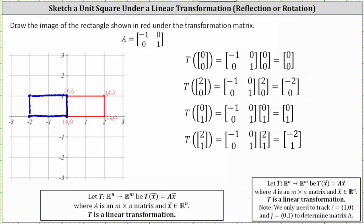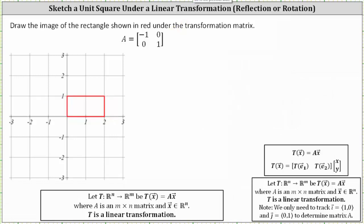Another approach would be to recognize that since we have the transformation matrix, the first column is the transformation of the vector e₁, or the vector (1, 0), and the second column is the transformation of the vector e₂, or the vector (0, 1). So let's go ahead and write this out.